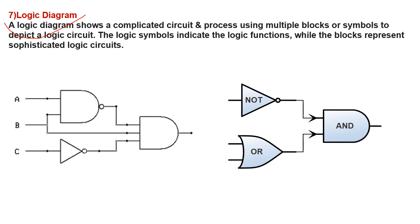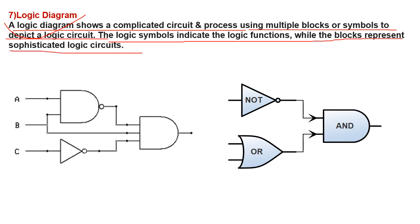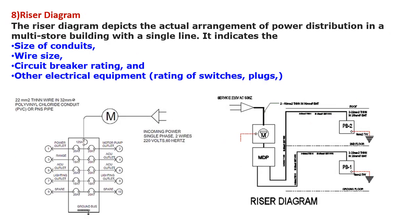The next one is the logic diagram. Generally, logic diagrams are used in electronic circuits, printed circuit board circuits, or IT sectors where logic gates are used. That type of diagram is known as a logic diagram. A logic diagram shows a complicated circuit process using multiple blocks or symbols depicting a logic circuit. The logic symbols indicate the logic functions while the blocks represent sophisticated logic circuits. Here circuit symbols such as AND gate are shown in the logic diagram.